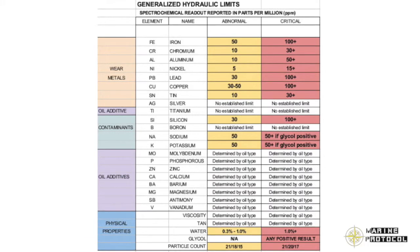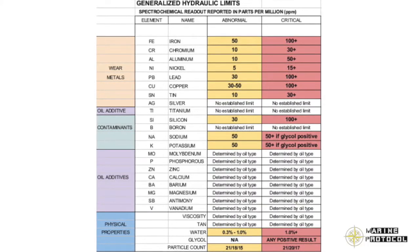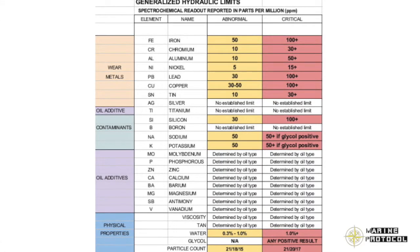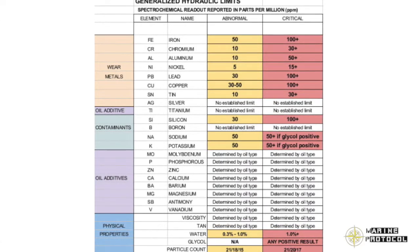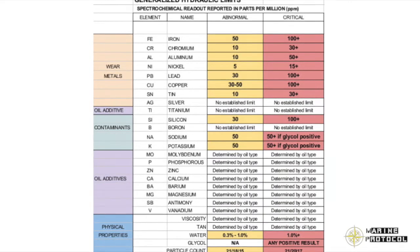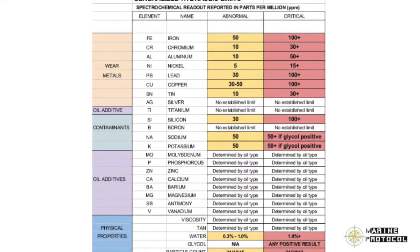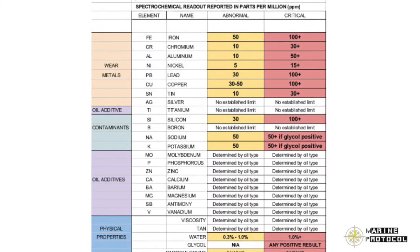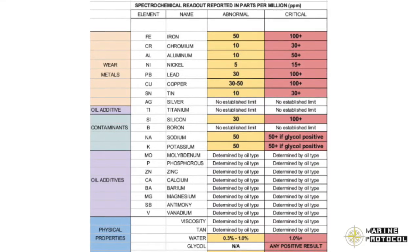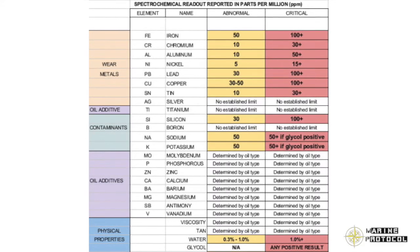Spectrochemical element identification: presence of tin, lead, bronze, copper, and aluminium indicates thrust bearings. Presence of chromium indicates piston rings. Iron indicates moving parts. Vanadium indicates fuel oil contamination. Sodium indicates fuel oil and sea water contamination. Manganese indicates valves and gears. Silicon indicates fuel oil additives and dirt. Presence of silver indicates thrust bearings.